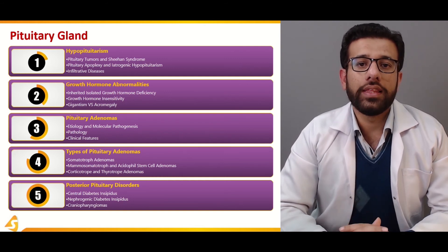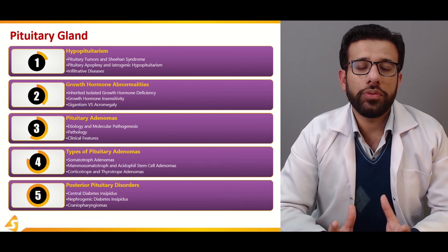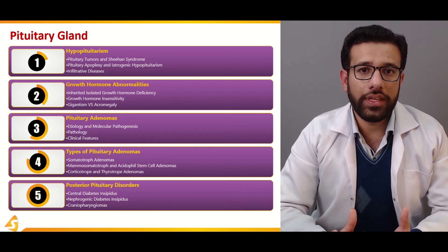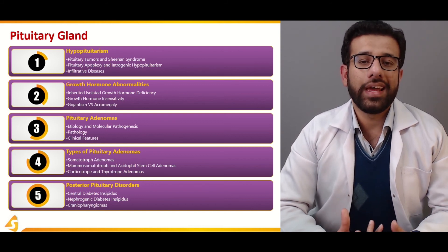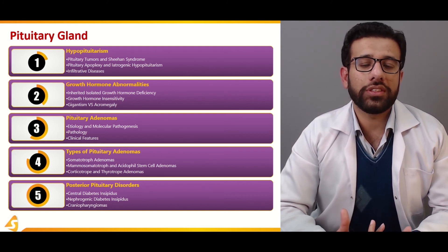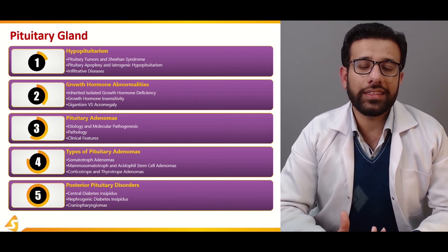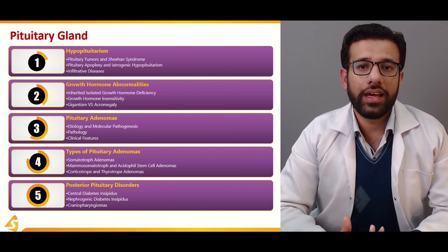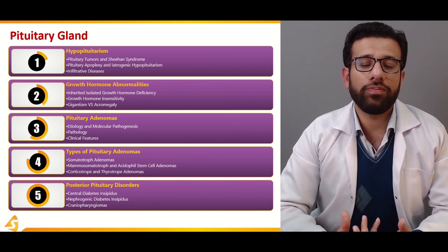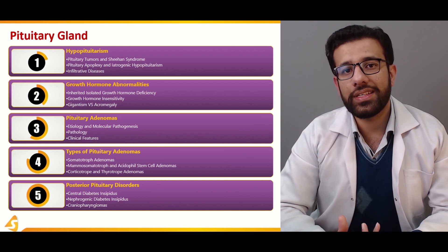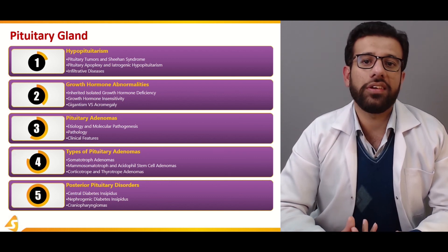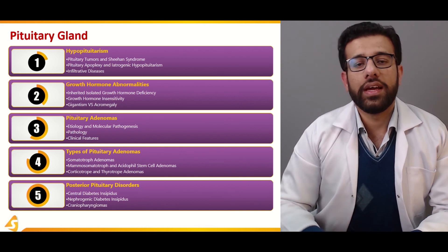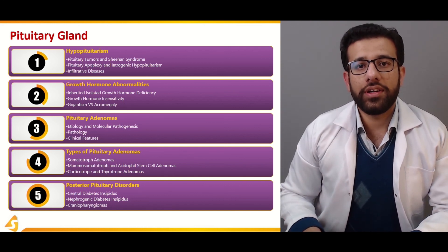The last section — section five — comprises the posterior pituitary. The anterior pituitary constitutes about 80% of the total gland, and the posterior pituitary is just about 20%. The main hormones secreted from the posterior pituitary are oxytocin and ADH. The mechanism of diabetes insipidus will be discussed, along with complications such as craniopharyngiomas. If you're interested, do watch the other sections of this lecture.